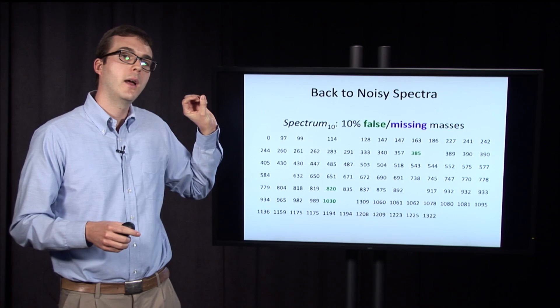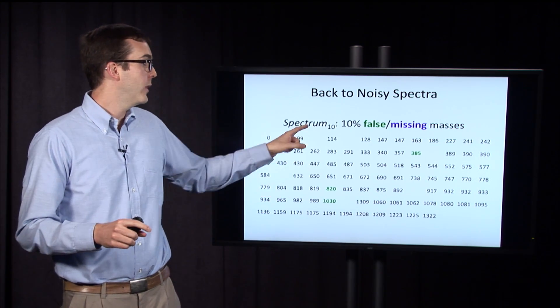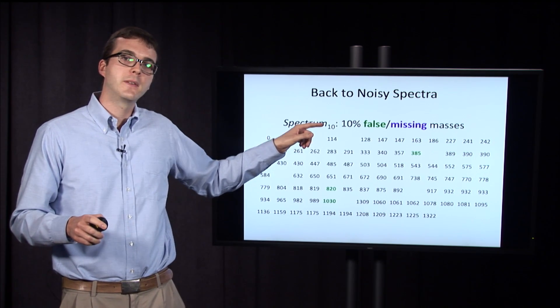So our question is, we expand our alphabet, and now we have to deal with a larger class of peptides. Let's run our leaderboard cyclopeptide sequencing algorithm on this expanded alphabet to this spectrum with 10% false and missing masses.